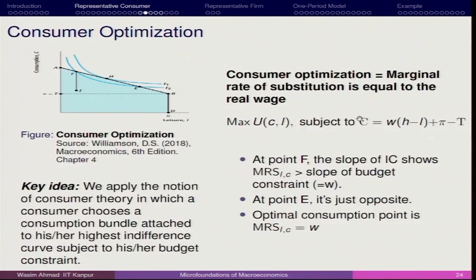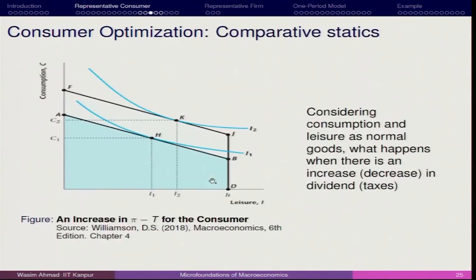In terms of the optimization framework, we set up the problem as: max U(C, L) subject to C = W(H − L) + π − t. You can solve this by substitution or by the Lagrangian method: max U(C, L) + λ[C − W(H − L)]. Taking first-order conditions with respect to C and L gives the optimal levels of consumption and leisure.